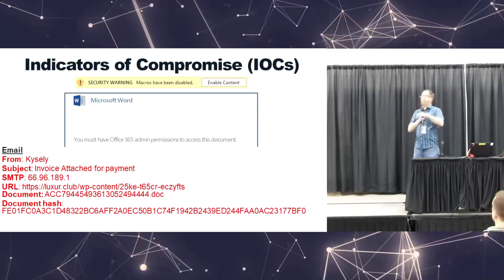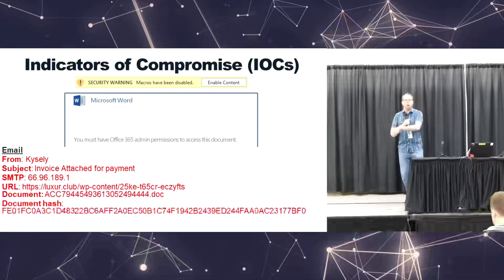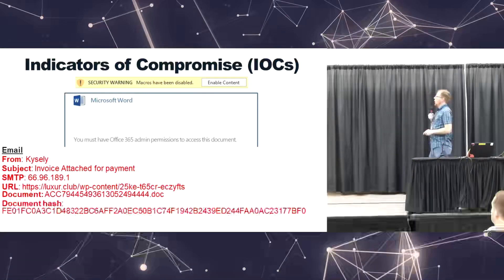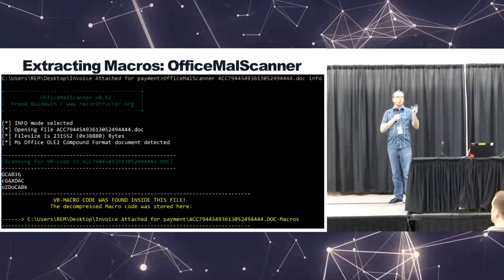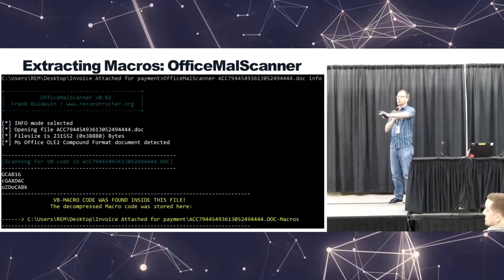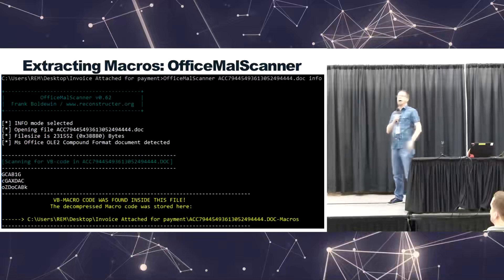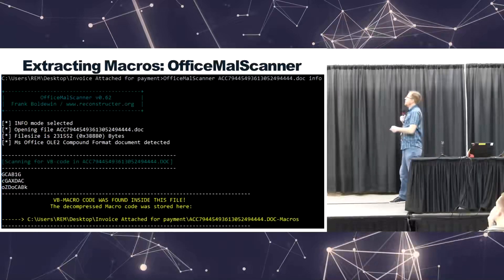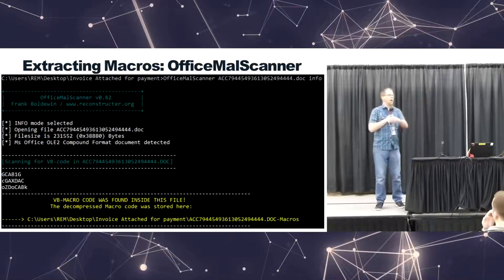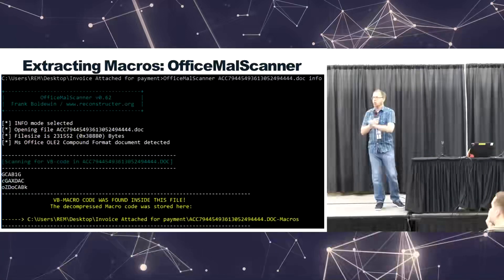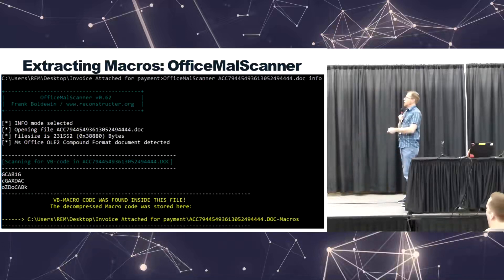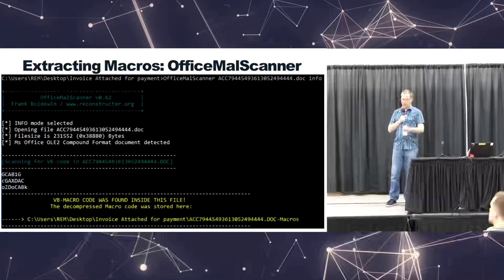Enabling content is evidence that there is a macro in the document. There are a couple of tools to extract macros. One is Office Malscanner — a really simple tool: just point it at the document and go. It works really well for .doc and .docx files. In this case it found three macros, yanked them out, and put them in a separate folder so you can check them out.